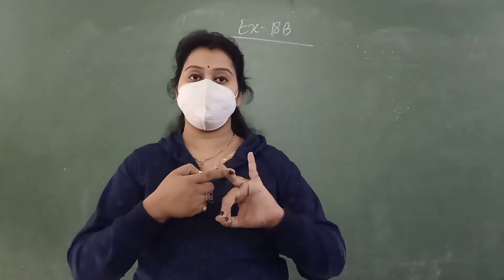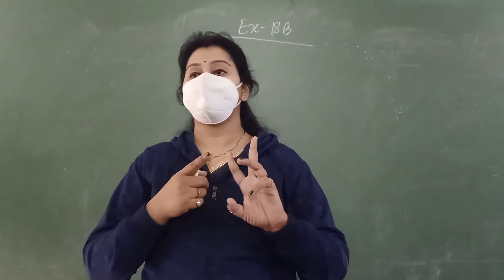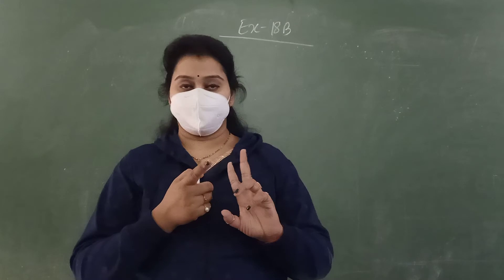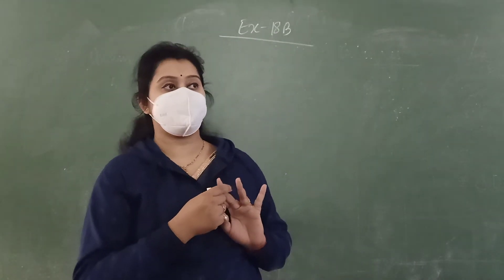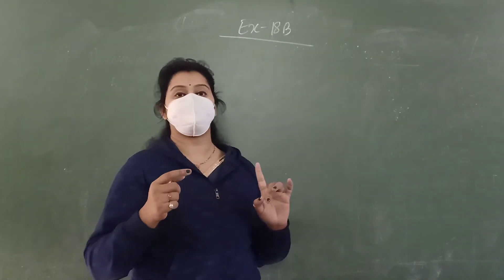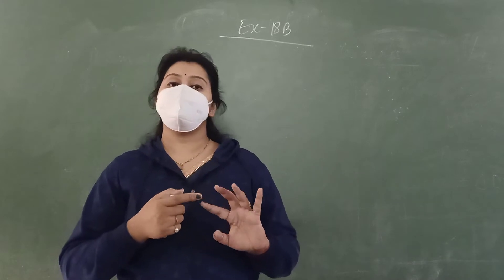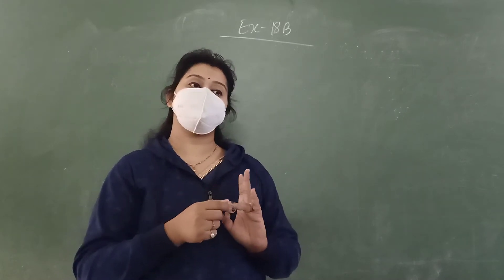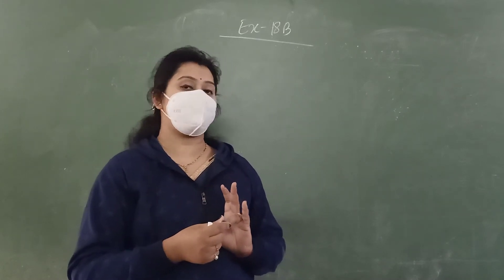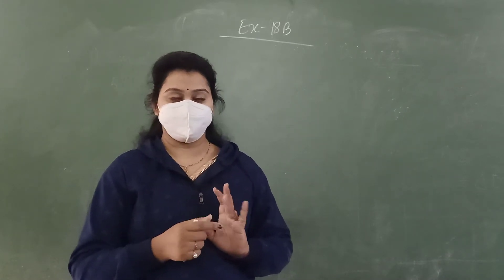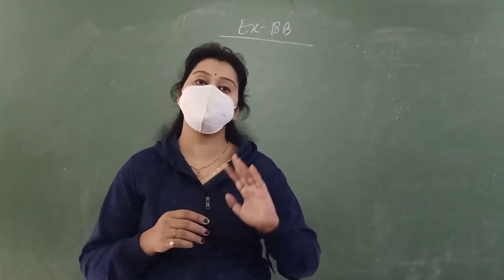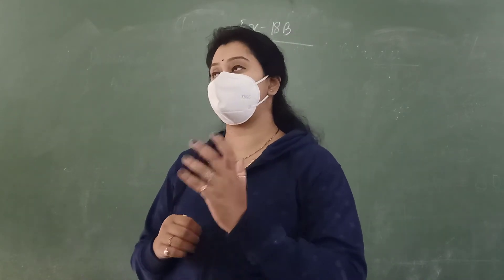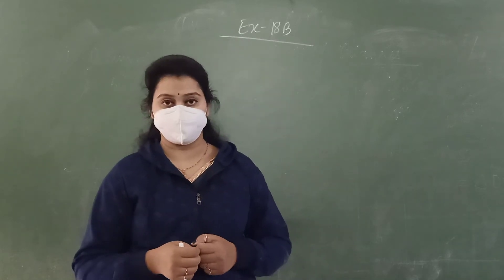SSS — when the 3 sides are equal. SAS — when 2 sides and the containing angle are equal. ASA — when 2 angles and the containing side are equal. And the 4th one is RH. When we have these 4 properties, then we can say that the triangles are congruent.